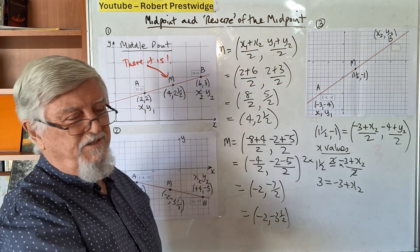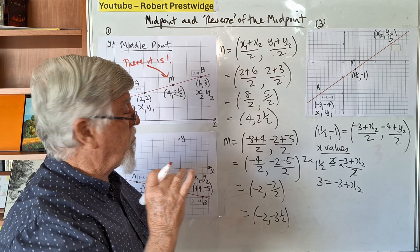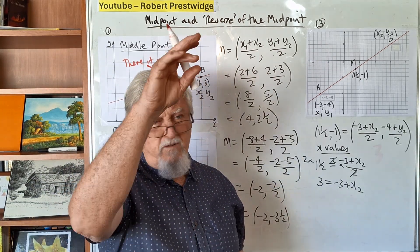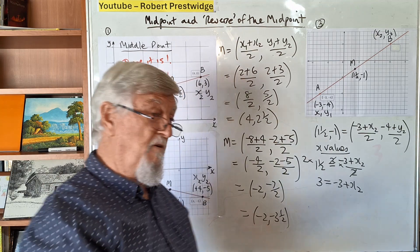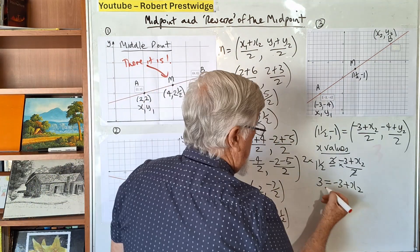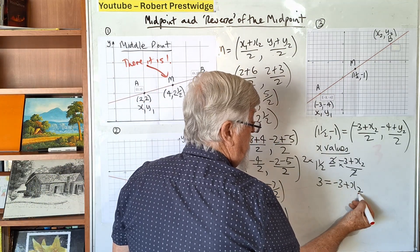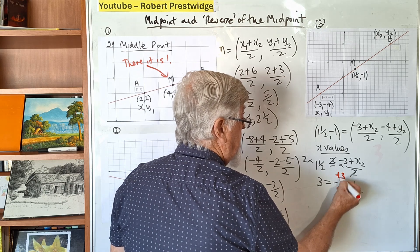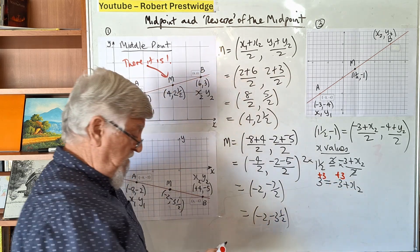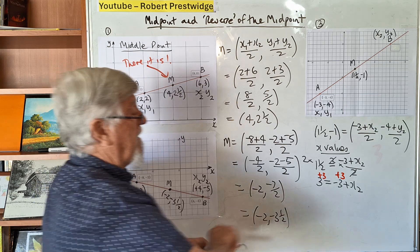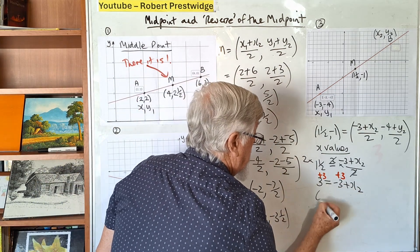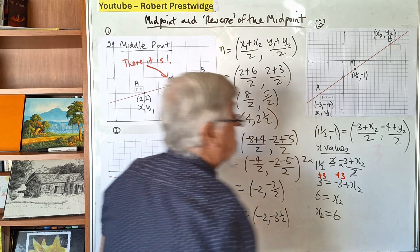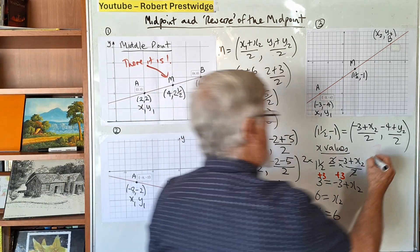I've got playlists on equations and harder equations. If you type in Robert Prestwidge and equations, lots of stuff comes up. If you're in class 9, scroll down to Pythagoras theorem and other topics. To get x₂ by itself, get rid of the -3. Add 3 to both sides.